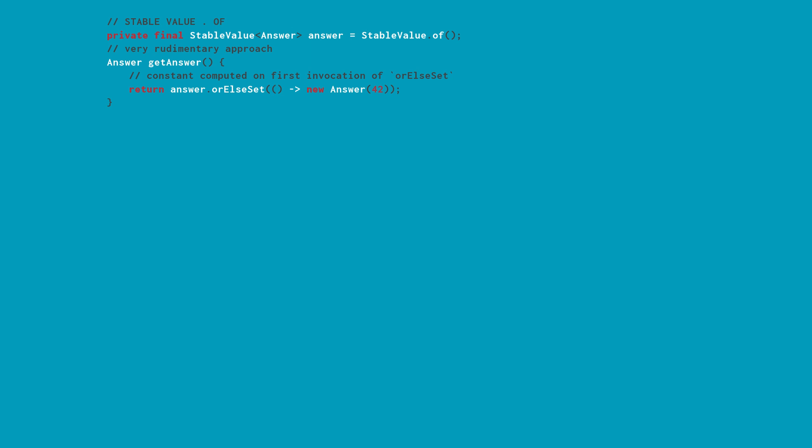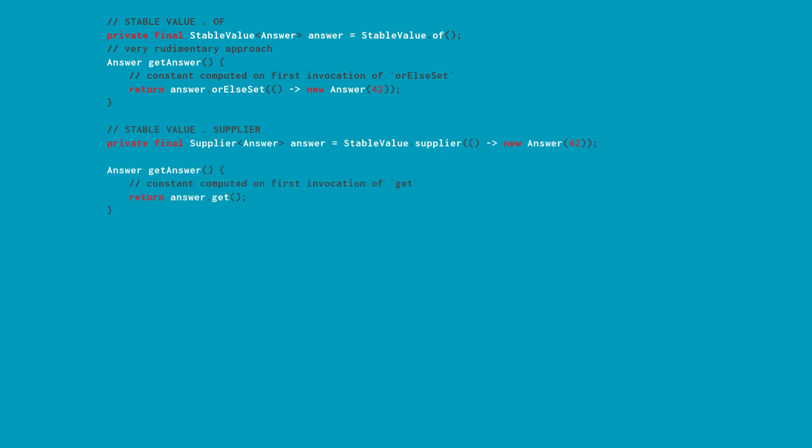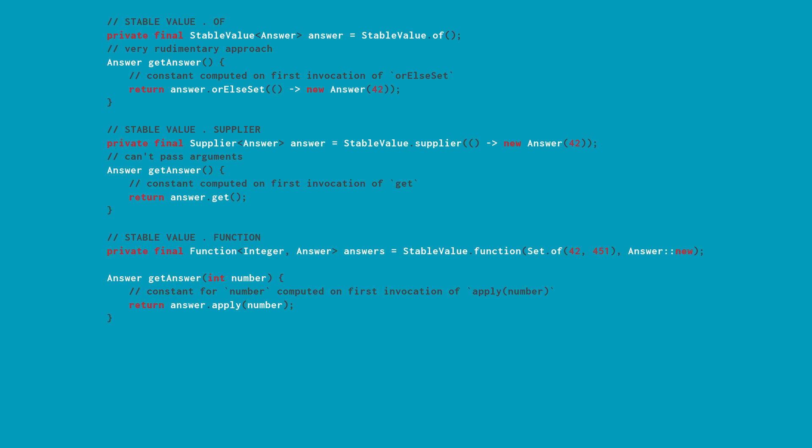From a logical perspective, the StableValue supplier is a more advanced method for creating constants because it utilizes a Supplier, allowing for the implementation of business logic of varying complexity. The only limitation of this approach is the lack of parameters, as they are not provided by the Supplier interface. Along with StableValue supplier, two additional stable value methods based on functional interfaces were proposed: StableValue function. This method assumes that instead of a supplier, a constant will be created using a single-parameter function. To create a stable function, a set of values is required along with a function that will be executed no more than once for each element in that set.